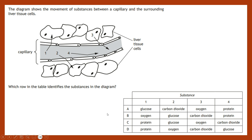Let's try a past paper question — pause the video, select your answer, then hit play when you're ready to reveal the correct answer. Here we have a diagram which shows the movement of substances between the capillary and the surrounding liver tissue cells. They've used the example of the liver but remember this would be true for any cell type. The question is: which row in the table identifies the substances numbered one to four in the diagram?